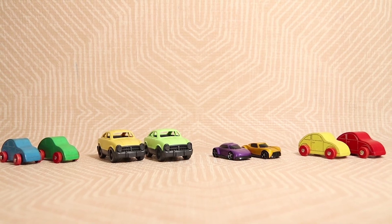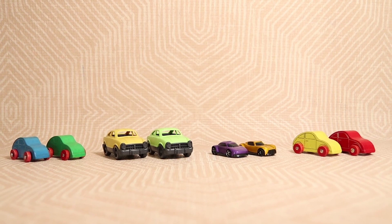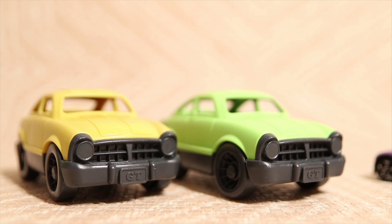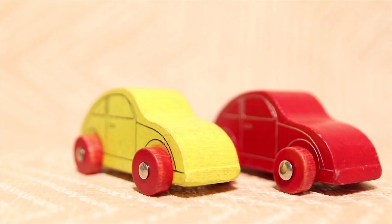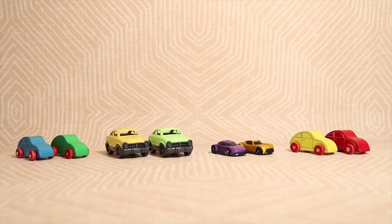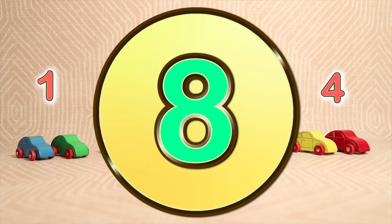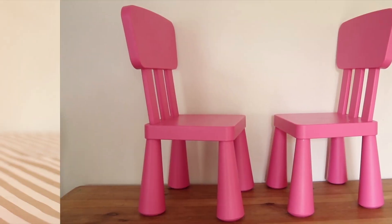Here we have eight cars. Let's work out how many lots of two there are. Here's one two, here's another two, here's another two, here's another two, and another two. That means we have one, two, three, four lots of two. Four lots of two cars is eight cars — four twos are eight.